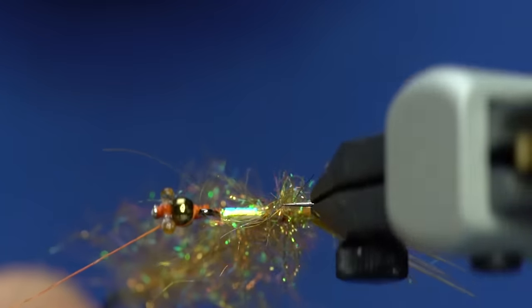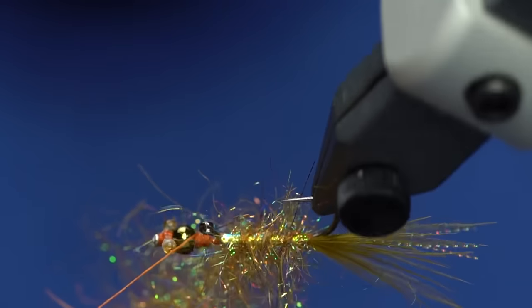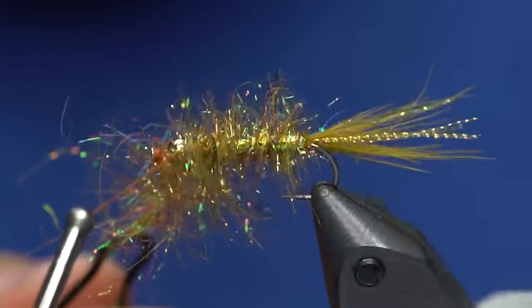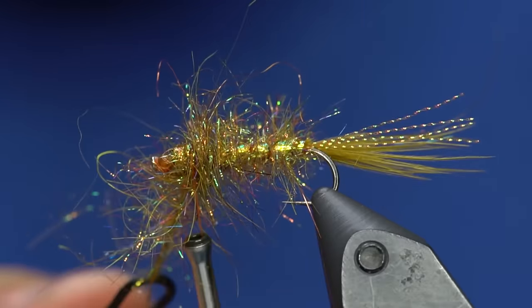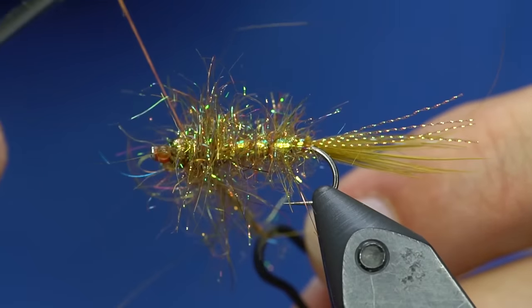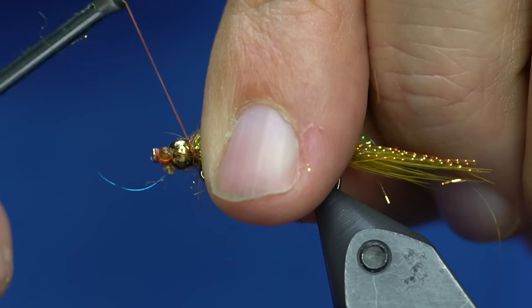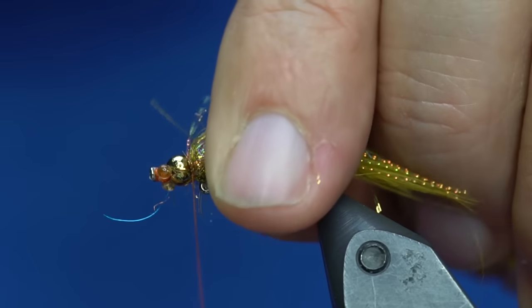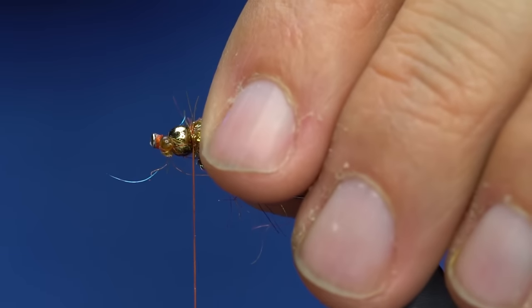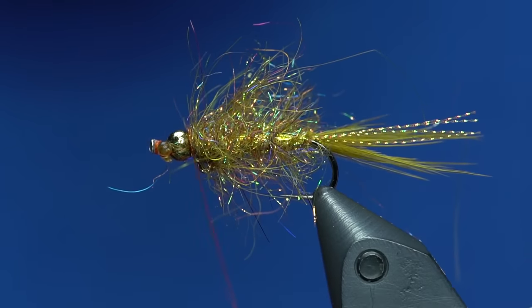Once I've done that, I can go ahead and just wrap. You want to leave a little bit of space in between the turns so you can see that the underbody is showing through there. Once I get up to the balanced part of it, just a couple wraps right next to the head. Then I'll just preen those back and trim off the excess, make a couple securing wraps, and whip finish.